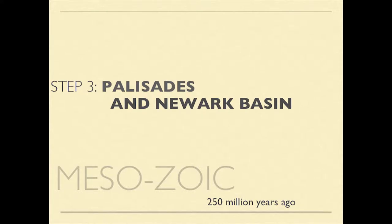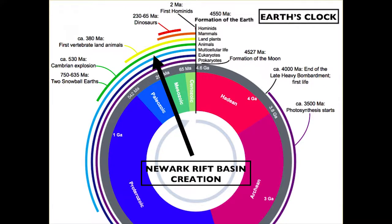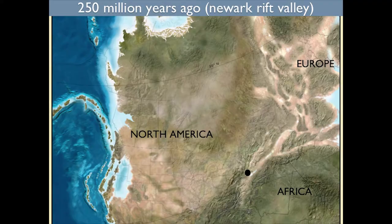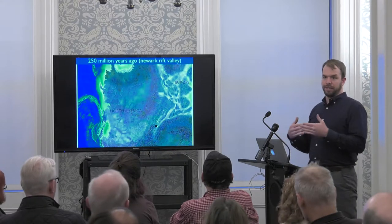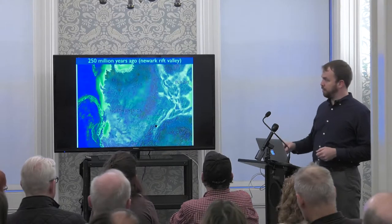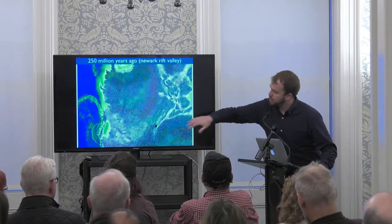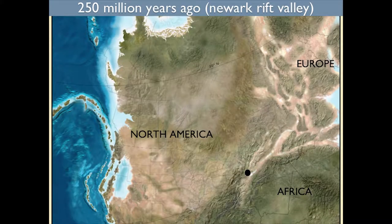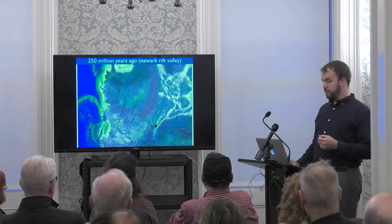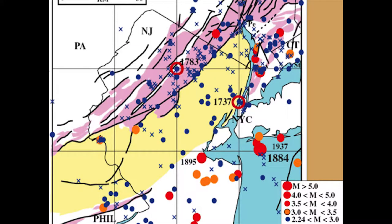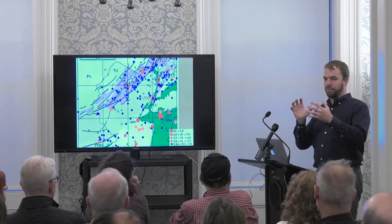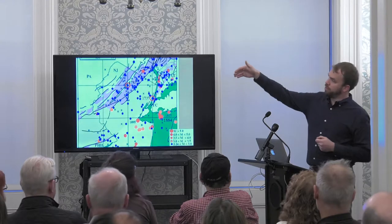Our third geologic step is the Palisades and Newark Basin, moving up to about 250 million years ago. That's when the Ramapo fault becomes relevant. North America and Africa had collided, but they rebounded relatively quickly — unlike Rodinia which lasted 500 million years, this lasted only about 80 million years before they started pulling apart. Little rift valleys opened up, splitting Europe, North America, and Africa apart from each other. The Newark Valley is actually the Newark rift basin, formed when the continents split.